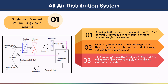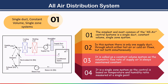This is called a constant volume system because the volumetric flow rate of supply air is always maintained constant. It is a single zone system because control is based on temperature and humidity ratio measured at a single point. As shown in the figure, outdoor air for ventilation and recirculated return air are mixed in the required proportion using dampers.